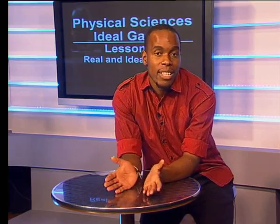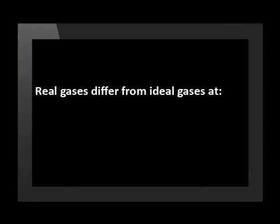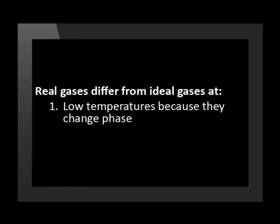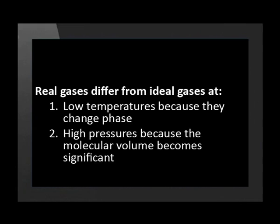Let's summarize the conditions under which real gases differ significantly from ideal gases and why this is so. Real gases differ from ideal gases at low temperatures because at low temperatures, gases change phase. And so, the gas laws no longer apply. Real gases also differ from ideal gases at high pressures. This is because at high pressures, the volume of the molecules themselves becomes significant. And so, can no longer be ignored.